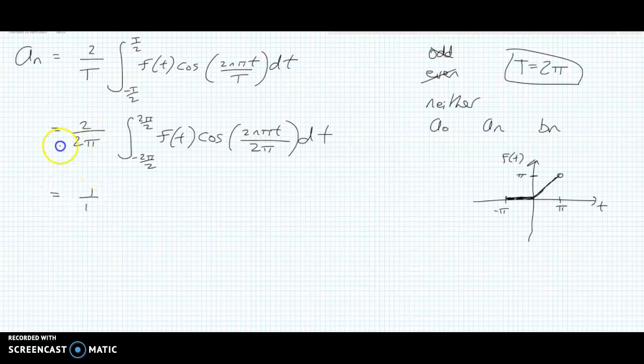And now we can cancel like we did previously, and we get 1 over π here, and our limits become positive π, negative π. Keep f(t) here, and then we have cosine. The 2 cancels with the 2, and the π cancels with the π, and we're left with cos(nt) dt.